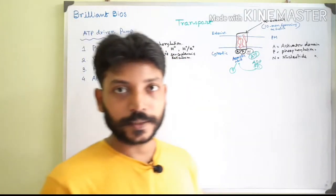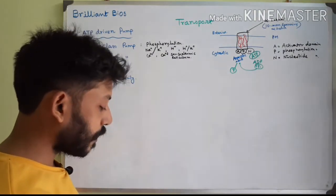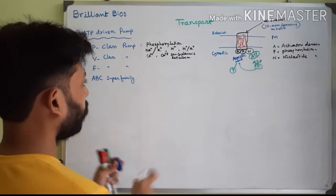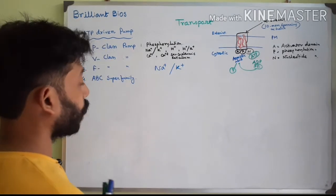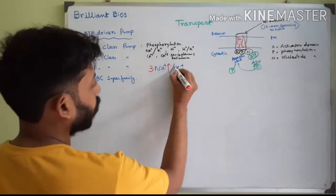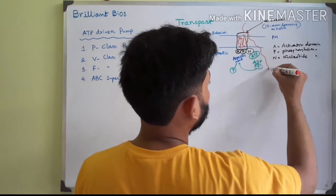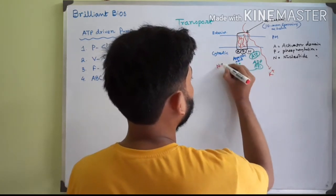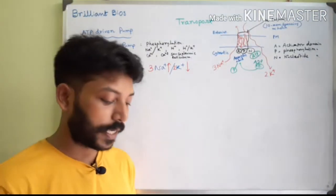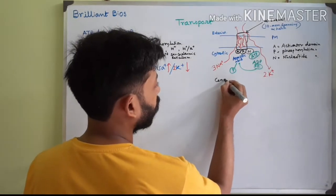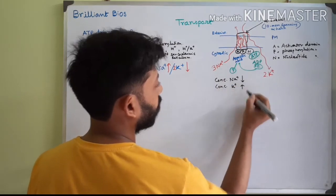The sodium-potassium pump is very important for membrane potential and is present all over the cell. In this pump, three sodium ions are pumped out and two potassium ions are pumped into the cytoplasm. So: three sodium come out, two potassium enter.